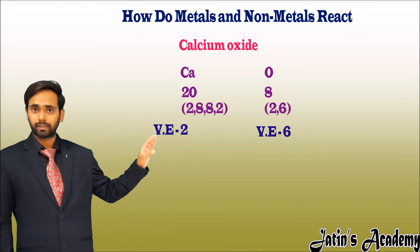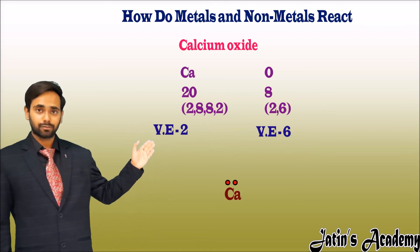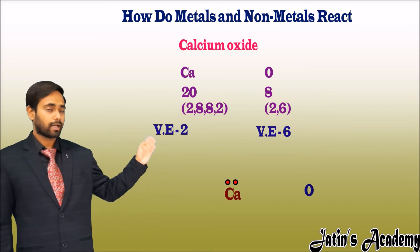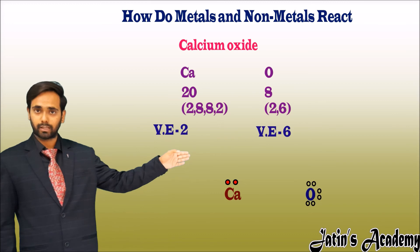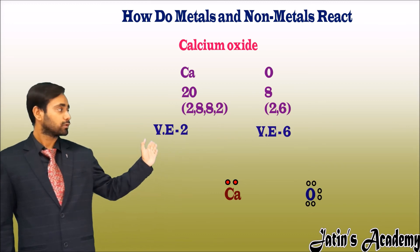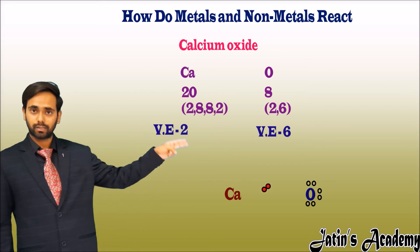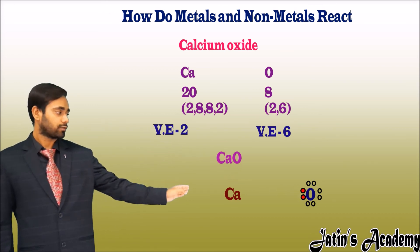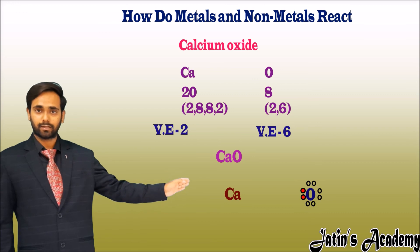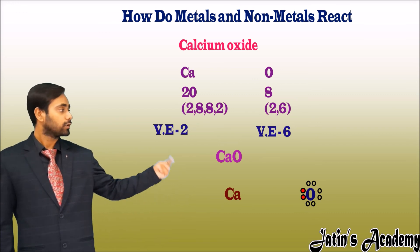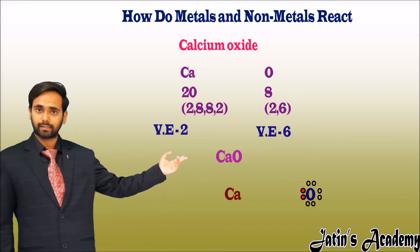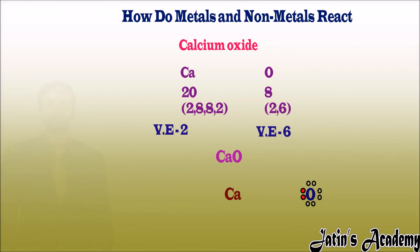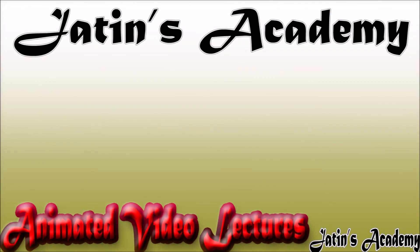So, in order to complete the octet, calcium has to donate 2 electrons and oxygen has to gain 2 electrons. Both needs are fulfilled, so calcium donates its 2 electrons to oxygen, resulting in the formation of calcium oxide, that is CaO. In this reaction, only one oxygen atom is taking part.